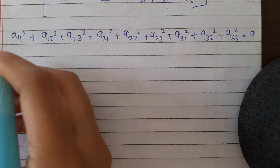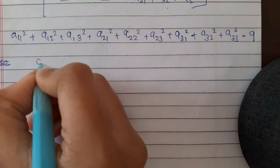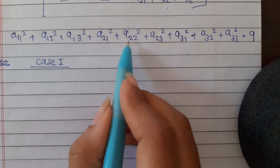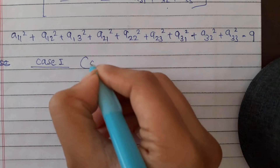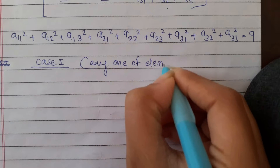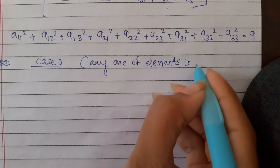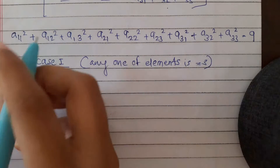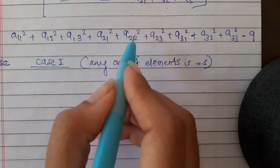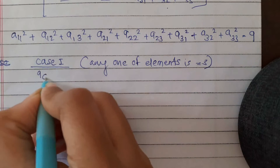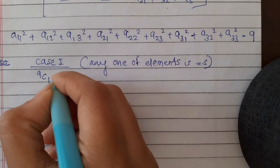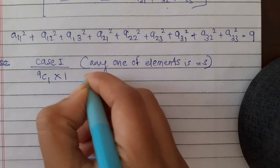Case 1: when any one of the 9 elements is equal to 3. Then the square of that element is 9 and the rest must all be 0. The number of ways is 9C1 × 1 = 9.